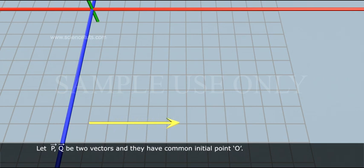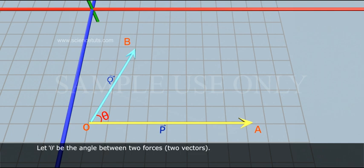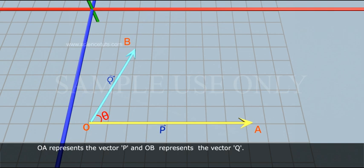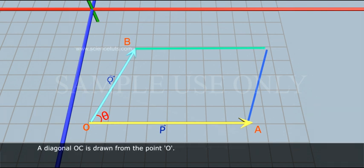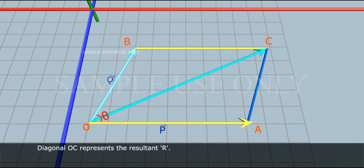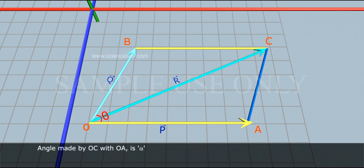Let P-bar and Q-bar be two vectors with common initial point O. Let theta be the angle between the two vectors. OA represents the vector P and OB represents the vector Q. A parallelogram OACB is constructed using these vectors as adjacent sides, and a diagonal OC is drawn from the point O.